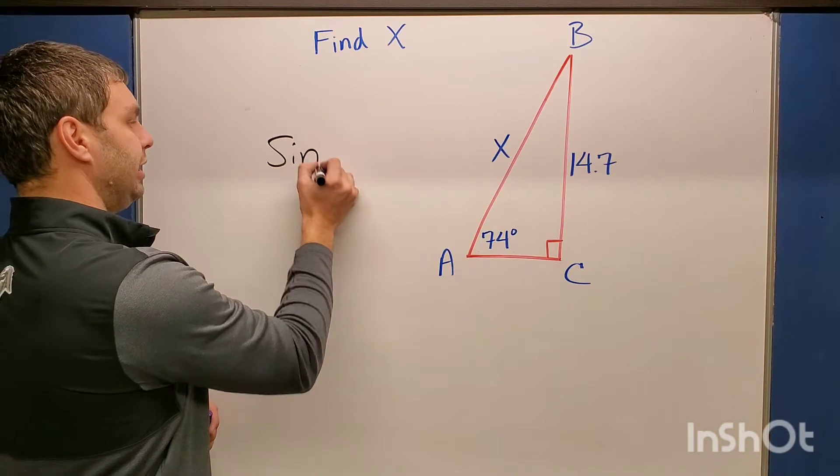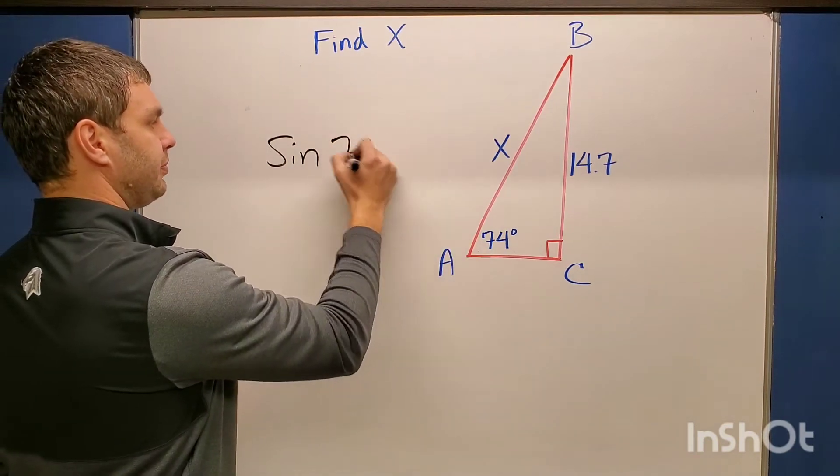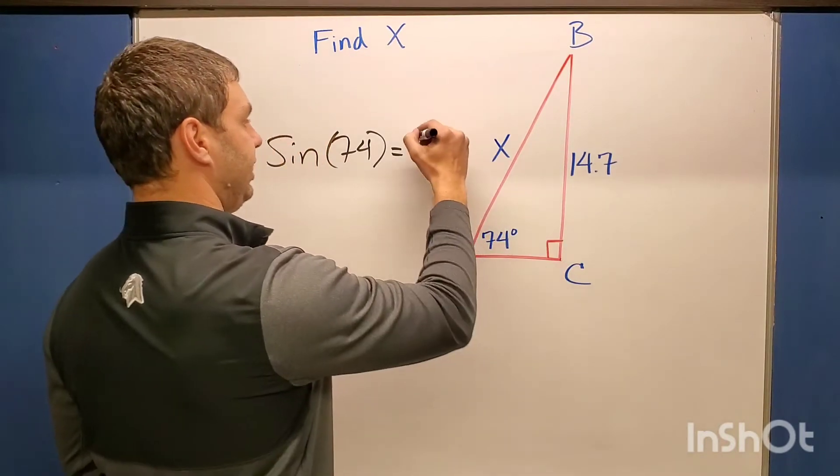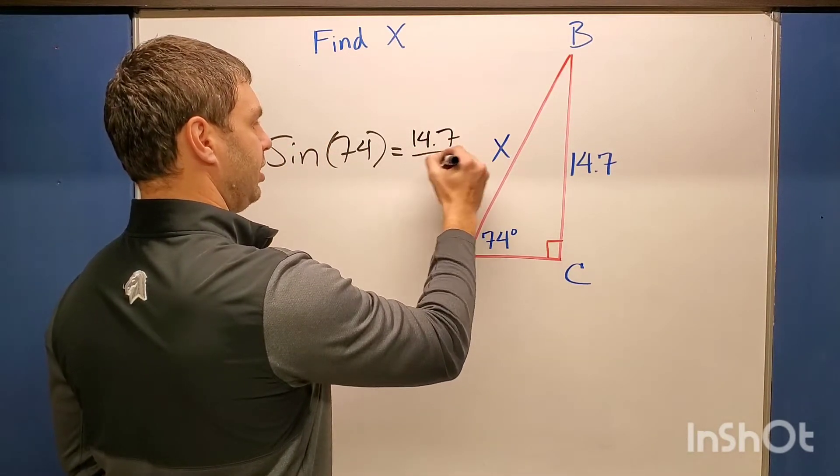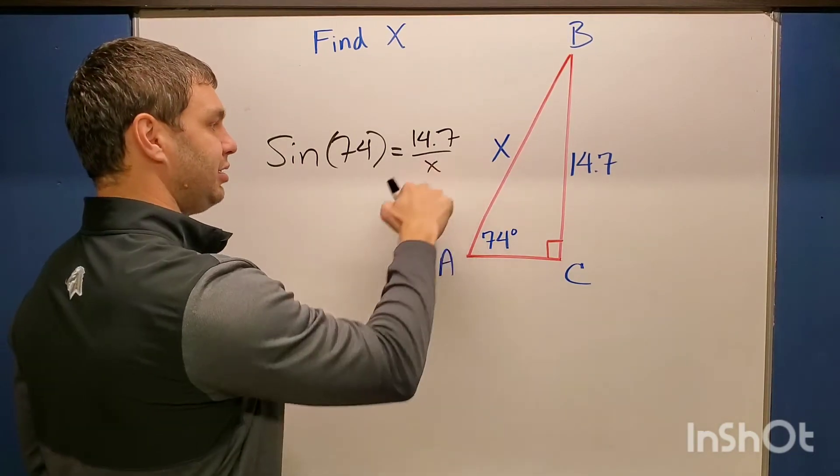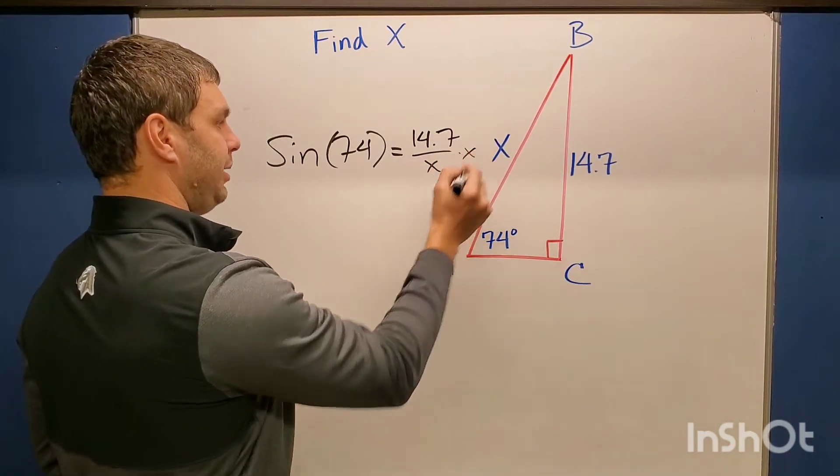So I'm going to say sine of 74 degrees equals that trig ratio, opposite over hypotenuse, in this case, 14.7 over X. In order to find X here, I need to multiply both sides by X to get it out of the denominator.